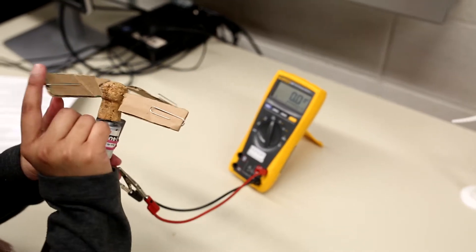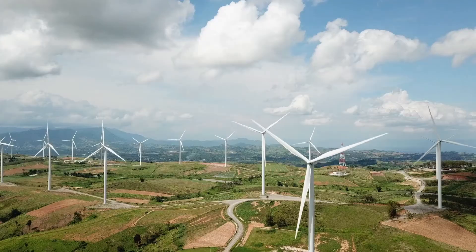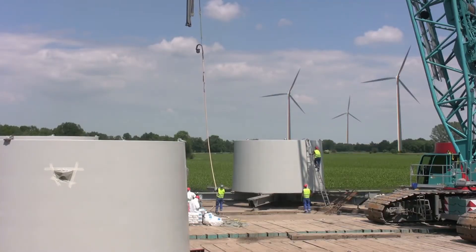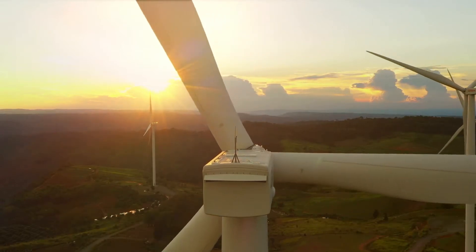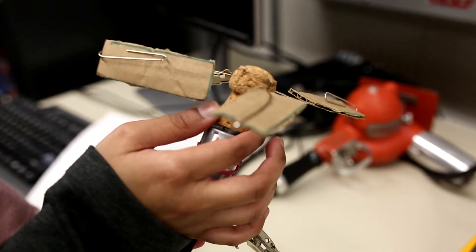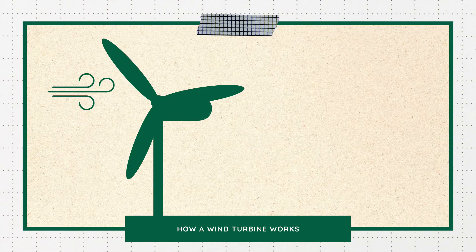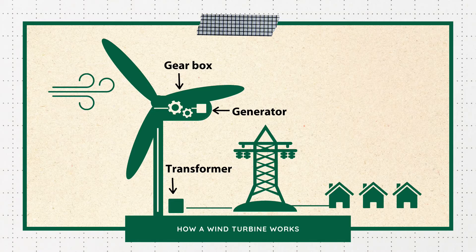Wind turbines may look small from a distance, but a modern turbine can be as tall as a 20-story building with wing-shaped airplane blades that are as long as a football field. The blades spin at a slow speed, about one revolution every three seconds. The blades are connected to faster spinning gears that create kinetic energy. A generator converts that energy into electricity, which then travels through a cable to the power grid.